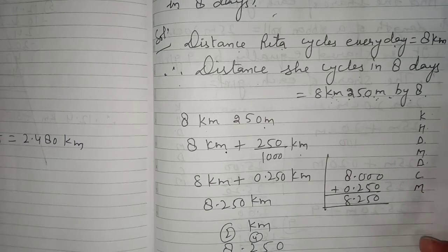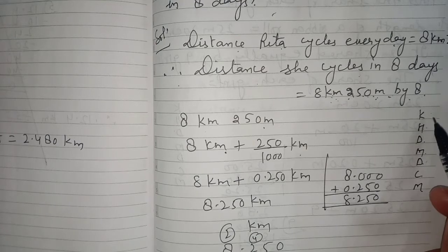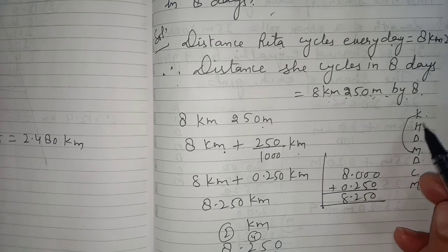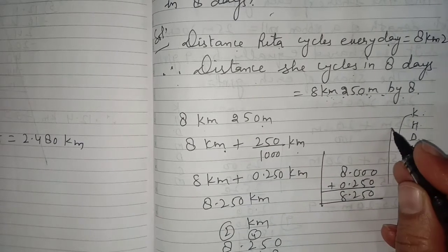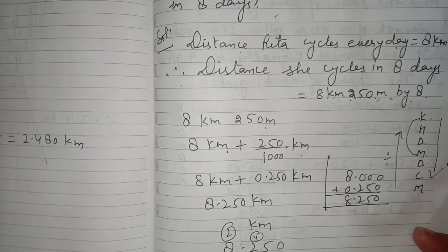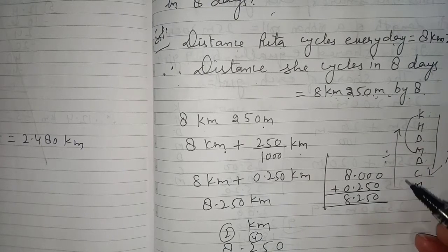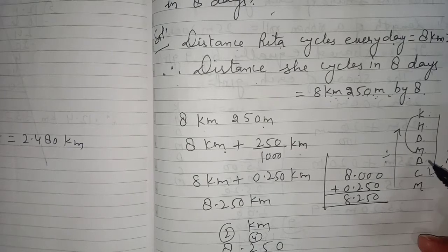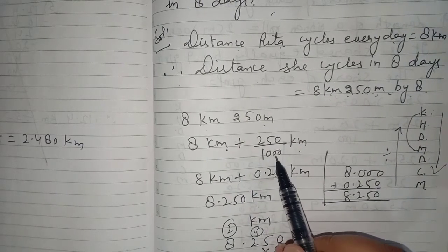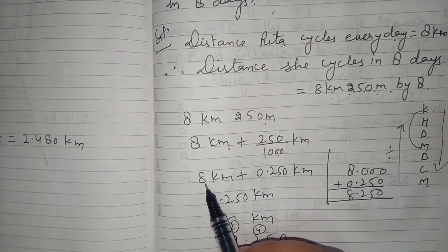To convert meter into kilometer we go three steps upward, so we divide. Going upward means converting to higher units, so we divide. We go three steps upward, so we divide by 1000. Thus 250 meter gets converted to kilometers.